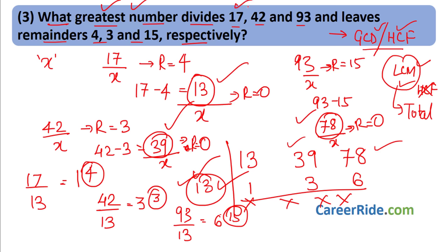So 713 is the answer. Whenever you need to find the least number and remainders are different, find the difference between each number and its remainder — if this difference is the same (here 7, 7, 7), subtract that common difference from the LCM. Whenever remainders are the same, add the remainder; when remainders are different but differences are the same, subtract the difference. Very easy to remember.